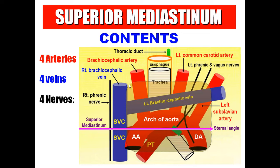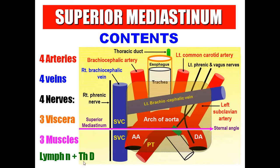Then four nerves: two phrenic nerves and two vagus nerves on each side, cardiac branches to the cardiac plexus, and the left recurrent laryngeal nerve. Then three viscera: trachea, esophagus, and upper part of the thymus gland. And three muscles: two muscles attached to the manubrium — sternohyoid and sternothyroid — and one prevertebral muscle, longus colli. Also lymph nodes and the thoracic duct.